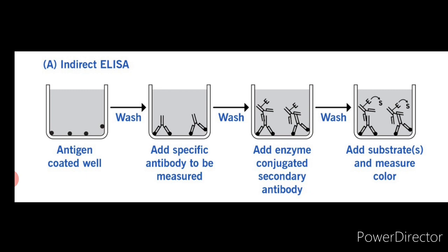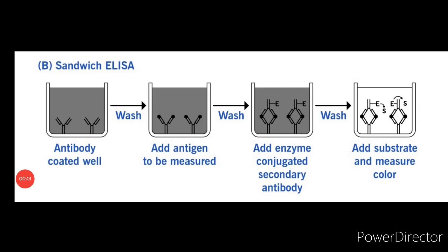Now let us understand sandwich ELISA. Antigen can be detected or measured by a sandwich ELISA. In this technique, the antibody rather than the antigen is immobilized on a microtiter well. A sample containing antigen is added and allowed to react with the immobilized antibody. After the well is washed, a second enzyme-linked antibody specific for a different epitope on the antigen is added and allowed to react with the bound antigen. After free secondary antibody is removed by washing, substrate is added and the colored reaction product is measured.